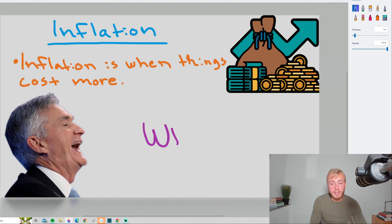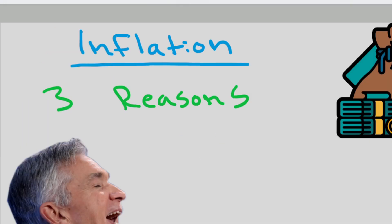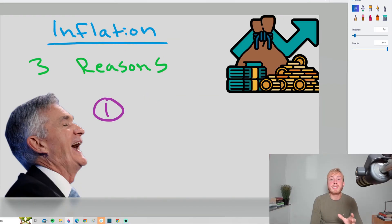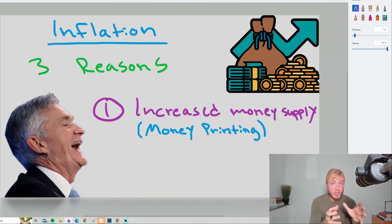But now even more importantly, we have to understand why. Why do we see inflation? In my opinion, we can put the reasons why we see inflation in three broad categories or three broad reasons. And reason number one is increased money supply, or in other words, money printing.